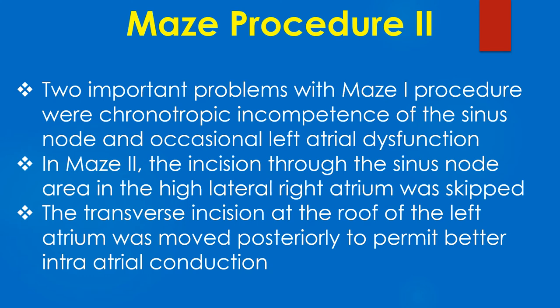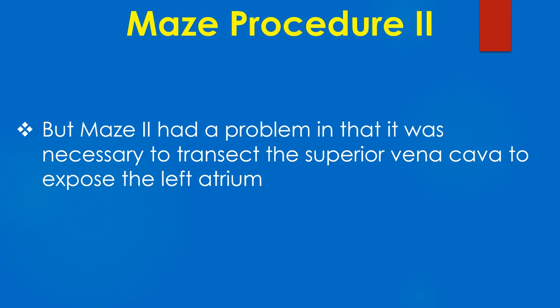Two important problems with Maze I procedure were chronotropic incompetence of the sinus node and occasional left atrial dysfunction. In Maze II, the incision through the sinus node area in the high lateral right atrium was skipped. The transverse incision at the roof of the left atrium was moved posteriorly to permit better intra-atrial conduction. However, Maze II had a problem in that it was necessary to transect the superior vena cava to expose the left atrium.